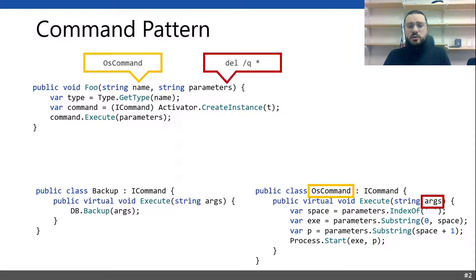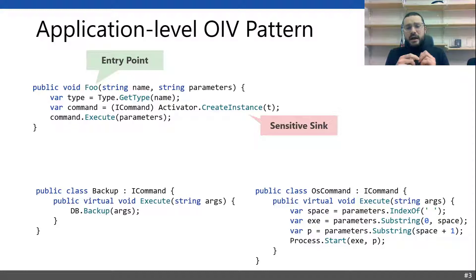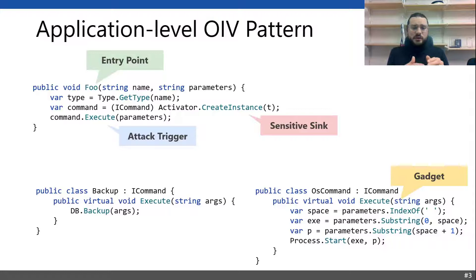Take a look at the OS command class that starts a new process. The attacker can execute an arbitrary command if the object of OS command class could be injected by execution of the command pattern. We may describe object injection vulnerability as a pattern that contains an entry point — a method call that creates an object by runtime information about the type — and a sensitive sink, a method call that transfers control flow to an unexpected state. In this example, it's a virtual call of the execute method. We call it an attack trigger. And the last ingredient is a gadget — a sequence of method calls that starts from an attack trigger and ends up executing some dangerous action like a process start.